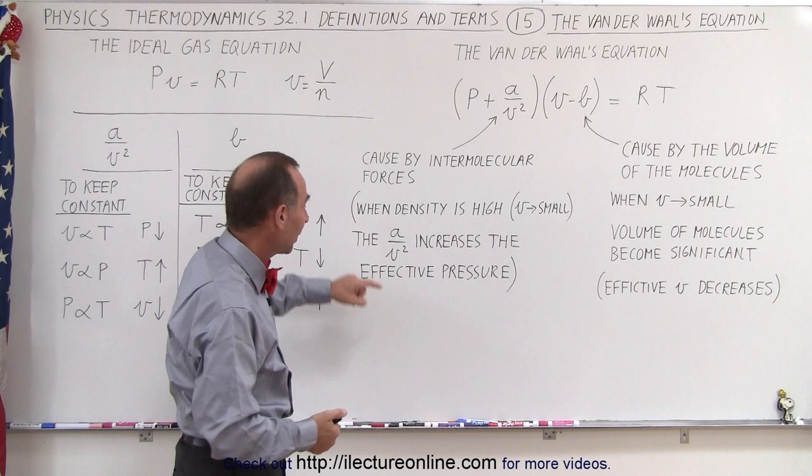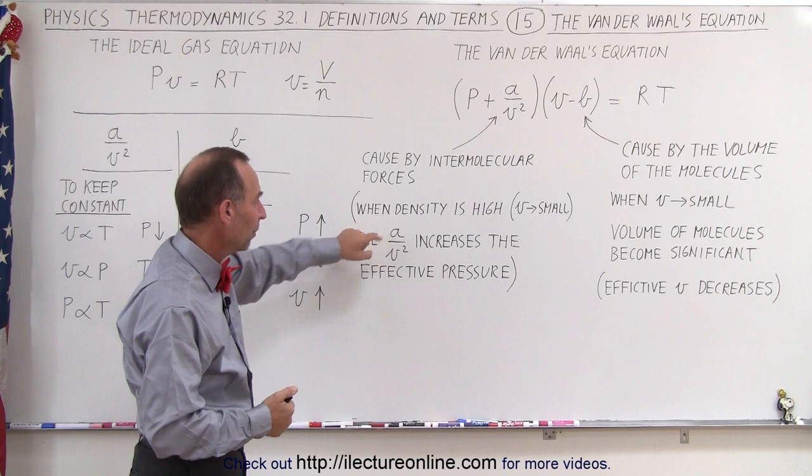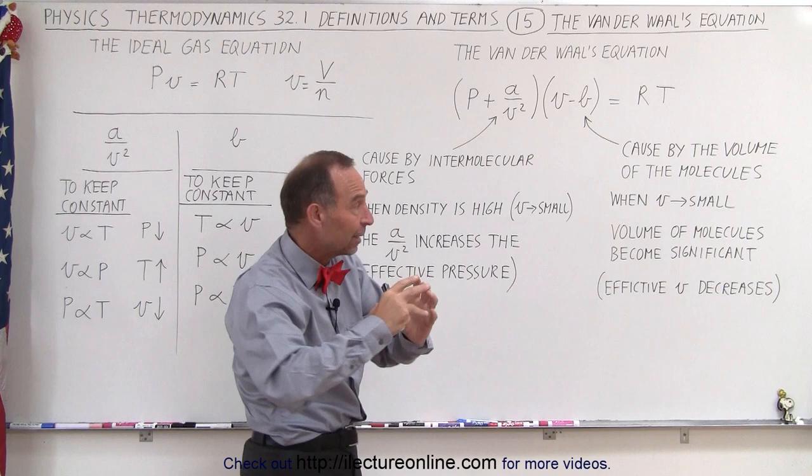we need to add this term because the effect of pressure increases by the term a divided by v squared. Here v is the volume per mole, and a is a constant specific to each particular gas, and we'll see a little bit more about that.